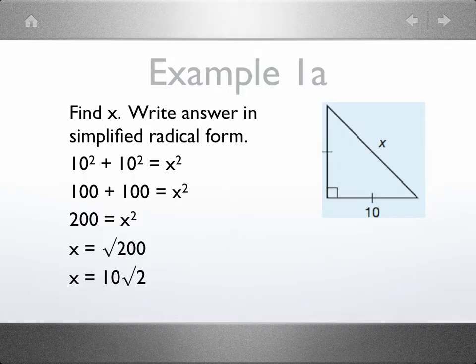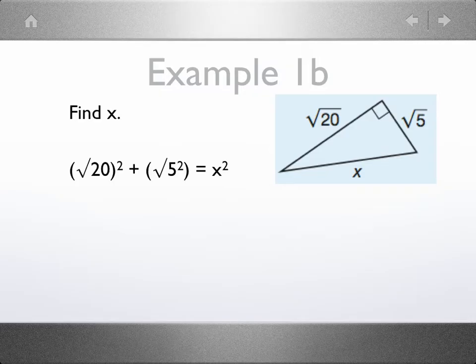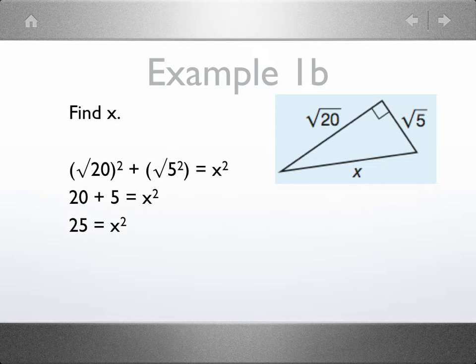Let's try another. We want to find x. We start by squaring the two legs. The square root of 20 squared is 20, the square root of 5 squared is 5. Simplify, take the square root, and we get that x equals 5.